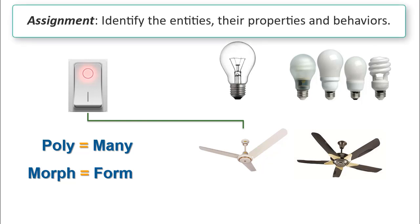Such a design is called polymorphic design and the ability of an object to take on many forms is called polymorphism. Here, poly means many, morph means form. Now for this scenario, can you identify the entities, their properties and behavior?